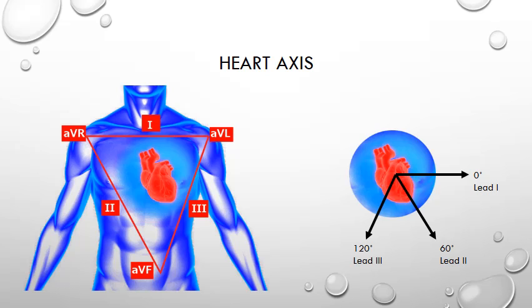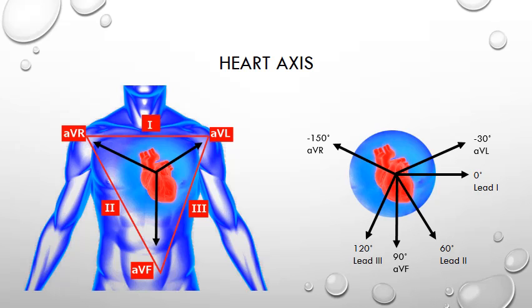If we add to the first three calculated leads the direction of electrical impulse towards the limb electrodes of AVR, AVL, and AVF, we can see that they have axes of minus 150, minus 30, and plus 90 degrees respectively. So you now know how the hex axial reference diagram is created.